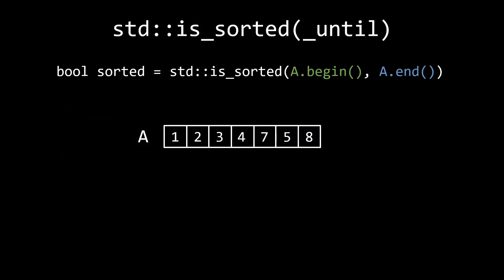The standard library offers two functions to check if your input is already sorted. We have std isSorted, which takes a begin and end iterator, and simply returns a boolean indicating whether the range is sorted. And, just like the different sorting algorithms, isSorted also accepts a comparator as an optional third argument.